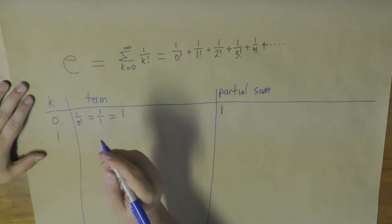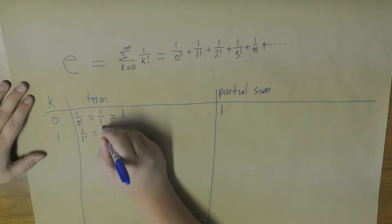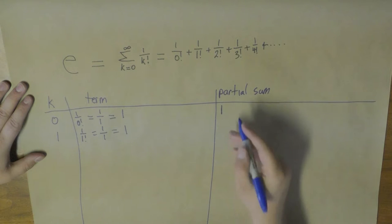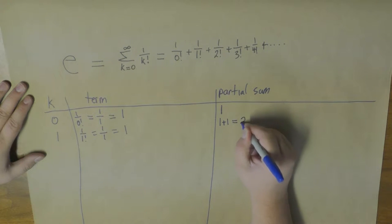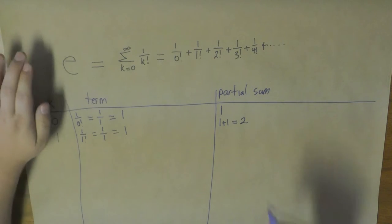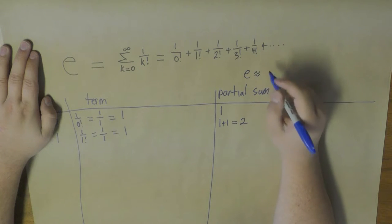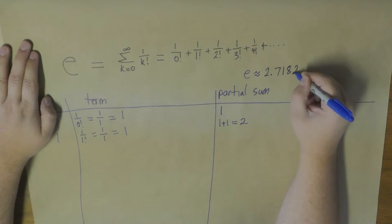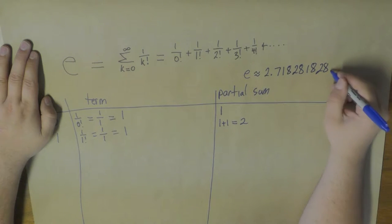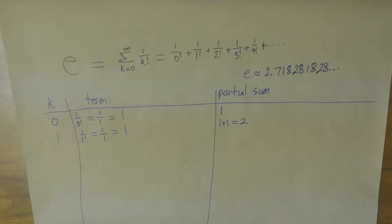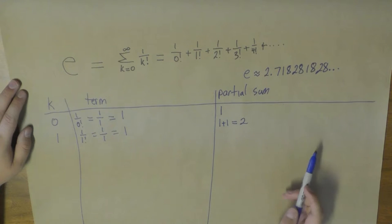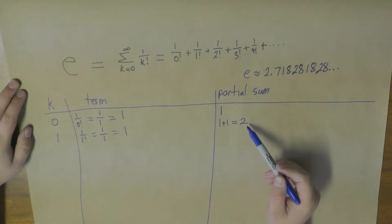At k equals 1, we get 1 over 1 factorial, where the colloquial definition of factorial works, and that gives us 1. Now our partial sum is 1 plus 1, which equals 2. Before I go any further, I'm going to tell you that e is approximately equal to 2.718281828... It does not repeat, though. The next digit after that last 8 is not a 1 — it does not repeat. If it did, then we would have a nice fractional representation for it.